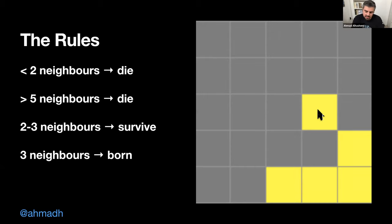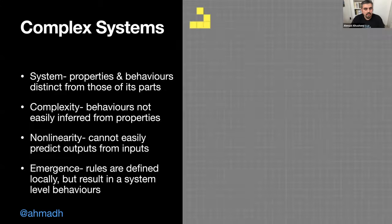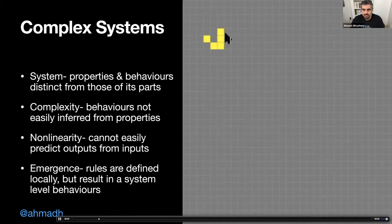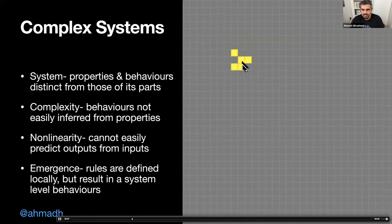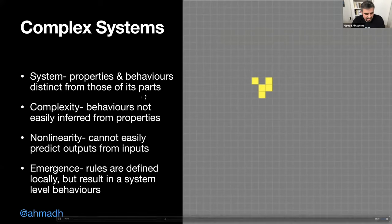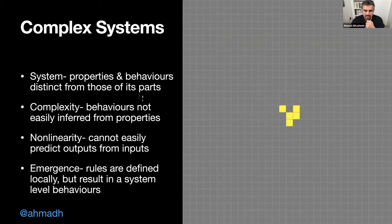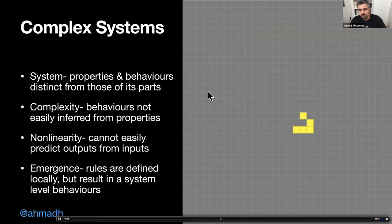On a bigger grid you can see the pattern going all the way across — it's moving all the way down. This is an example of a complex system, where the properties and behaviors of the system are different from the properties and behaviors of each individual cell or component.